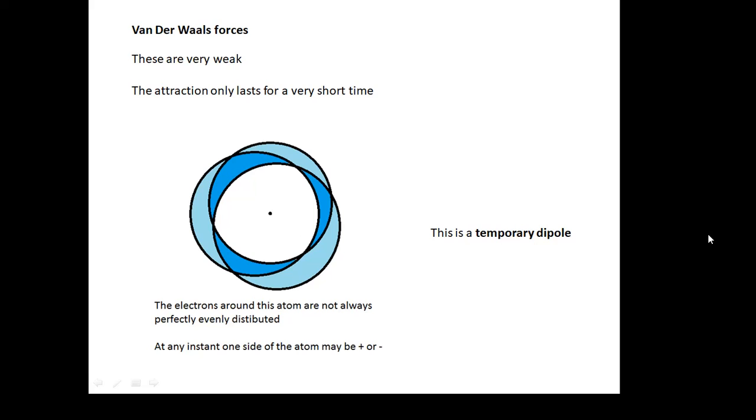If you imagine the electrons whizzing around in an atom, they don't spend the same time in every place. Sometimes you might find the electrons kind of on one side or on the other side. The electrons aren't always evenly distributed. The electrons around this atom are not always perfectly evenly distributed. And so, at any point in time, you'll have a negative end and a positive end. It's called a temporary dipole.